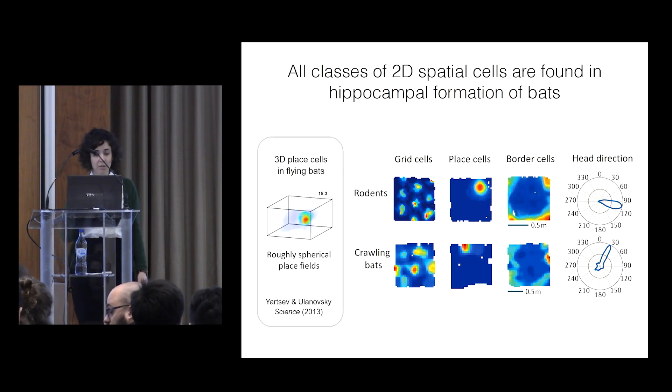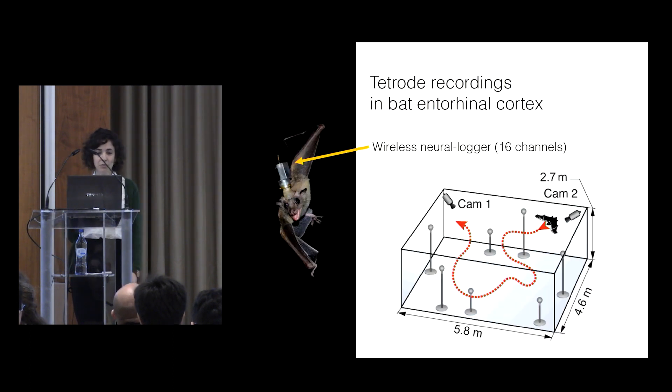Our lab has shown also that in 3D, when bats fly, there are 3D place cells with roughly spherical place fields. And so now, when we go on to record grid cells in 3D,